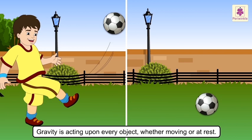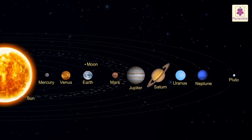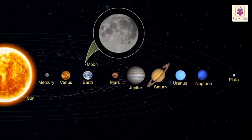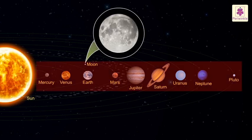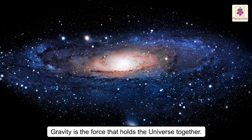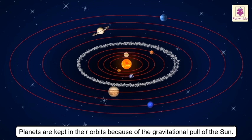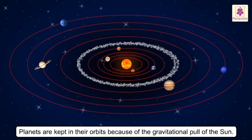Gravity is acting upon every object whether moving or at rest. It keeps us and all other objects from floating in space. Gravity is present not only on earth but also on the moon and other planets, though the amount of pull differs everywhere. The moon's gravity is one-sixth that of the earth. Gravity is the force that holds the universe together. All the planets are kept in their orbits because of the gravitational pull of the sun.